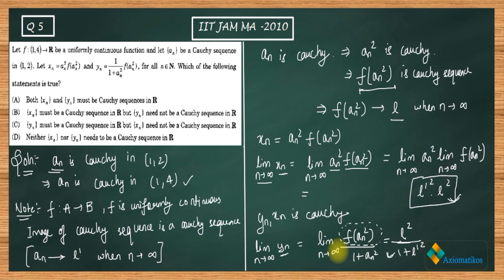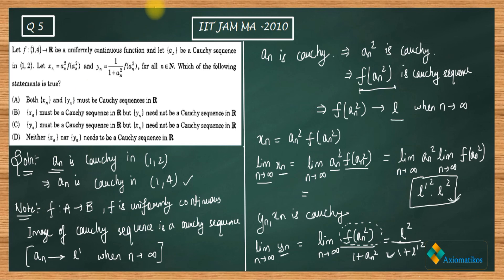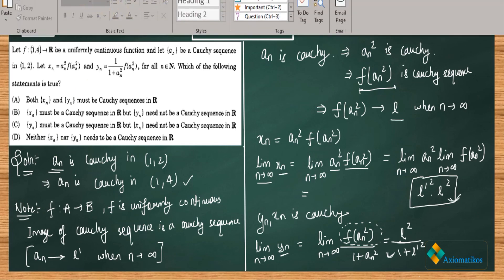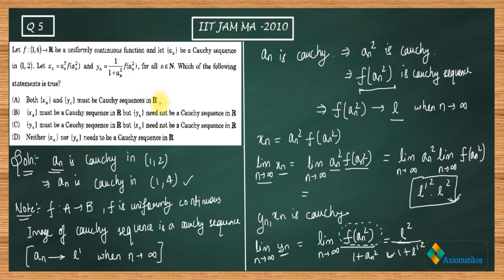So we have proved that both xn and yn are Cauchy. The important results used are: under a uniformly continuous function the image of a Cauchy sequence is Cauchy, and inside ℝ, Cauchy is equivalent to convergent. Therefore option A is the correct answer. The other options are incorrect.